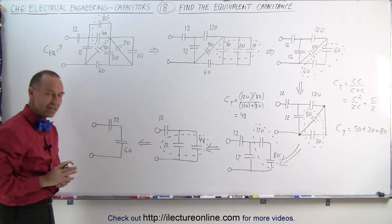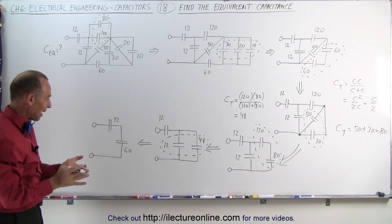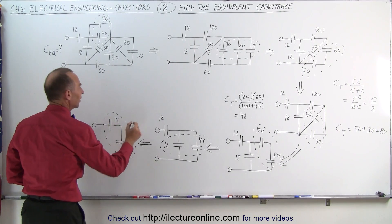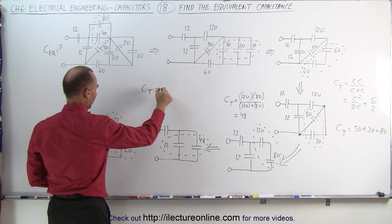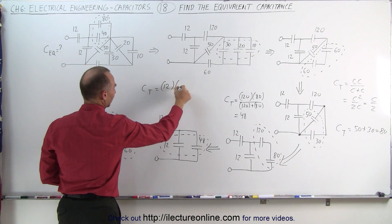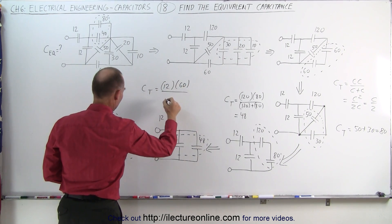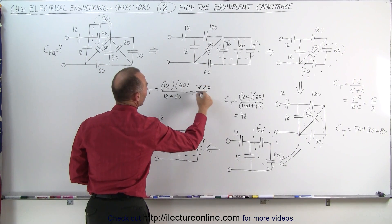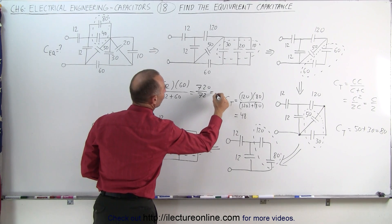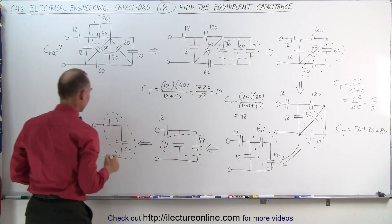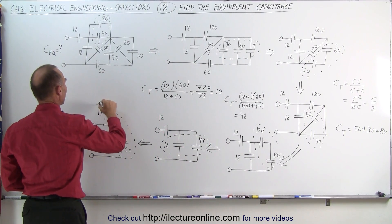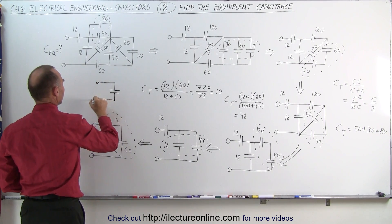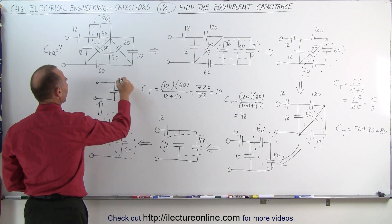Finally, we need to combine the last two. They are in series, which means we use the product over the sum method. C total equals 12 times 60 divided by 12 plus 60, which is 720 divided by 72, which equals 10. That means we can finally say we have one equivalent capacitor, which is equal to 10 microfarads.